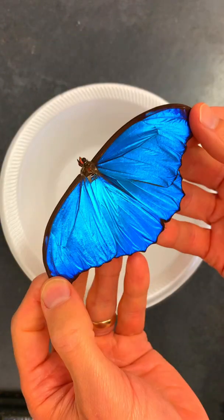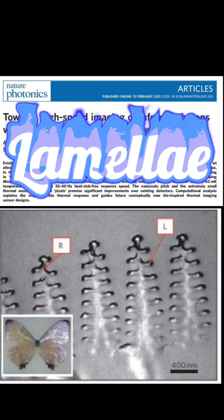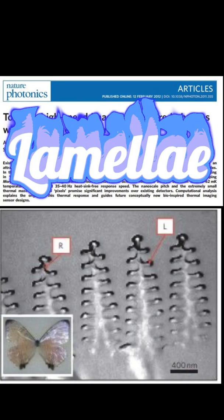That blue color is absolutely beautiful. I find it remarkable that the blue color doesn't come from pigments or chemicals in the wings. Instead, the blue color arises from the way that light interacts with microscopic tree-like structures on the surface of the wing.